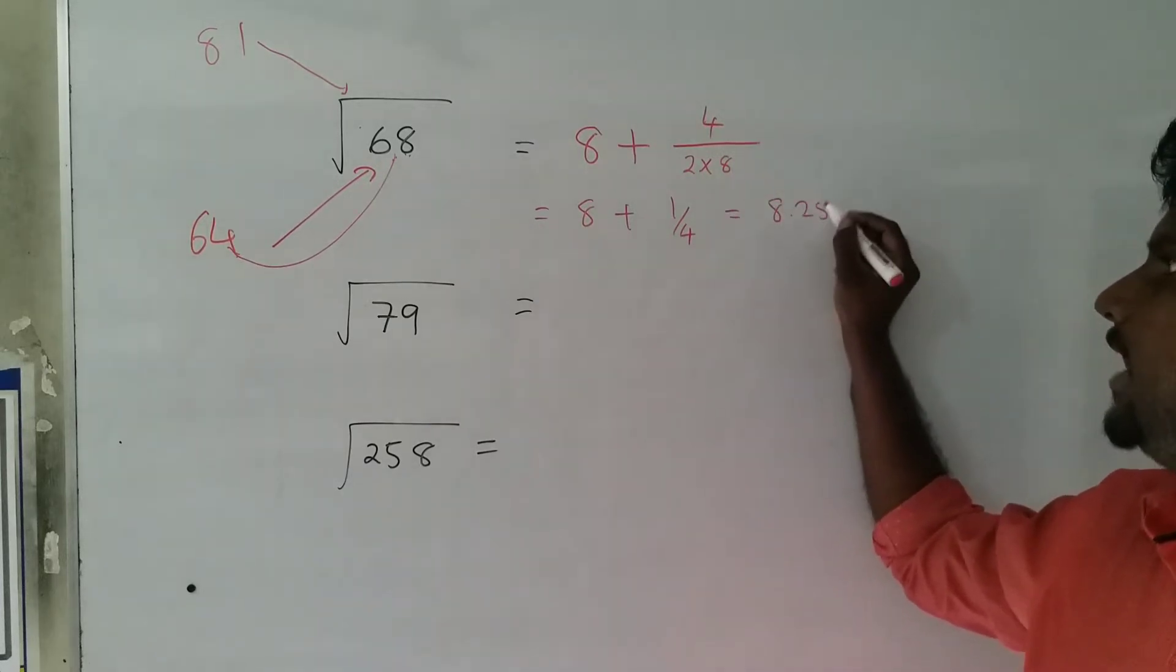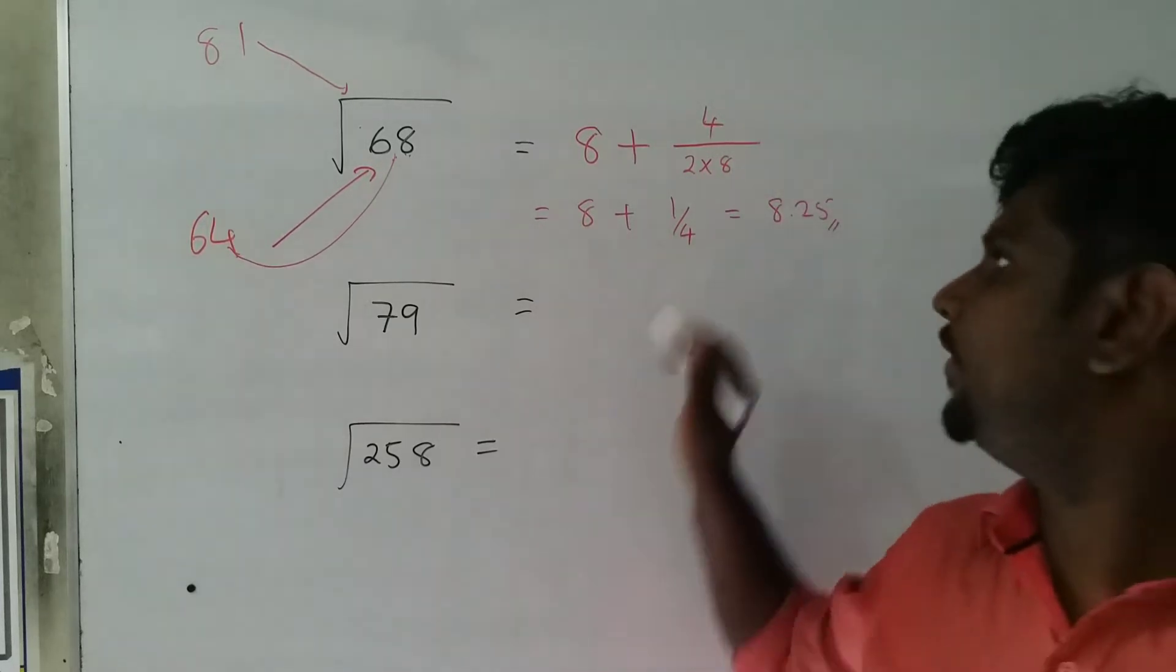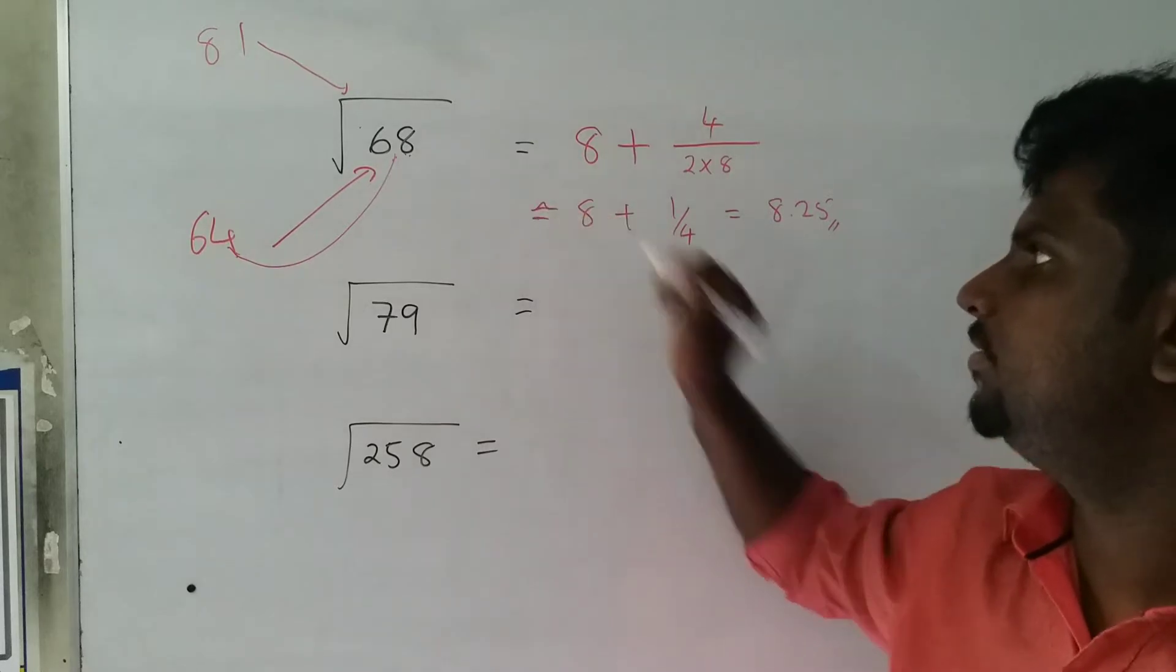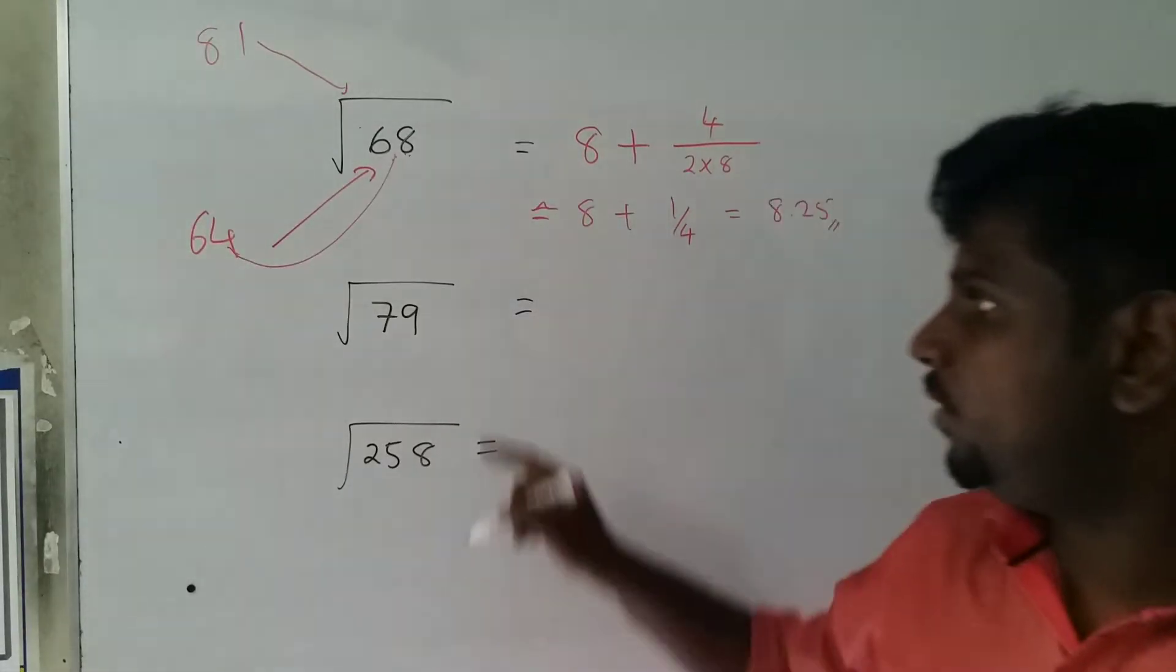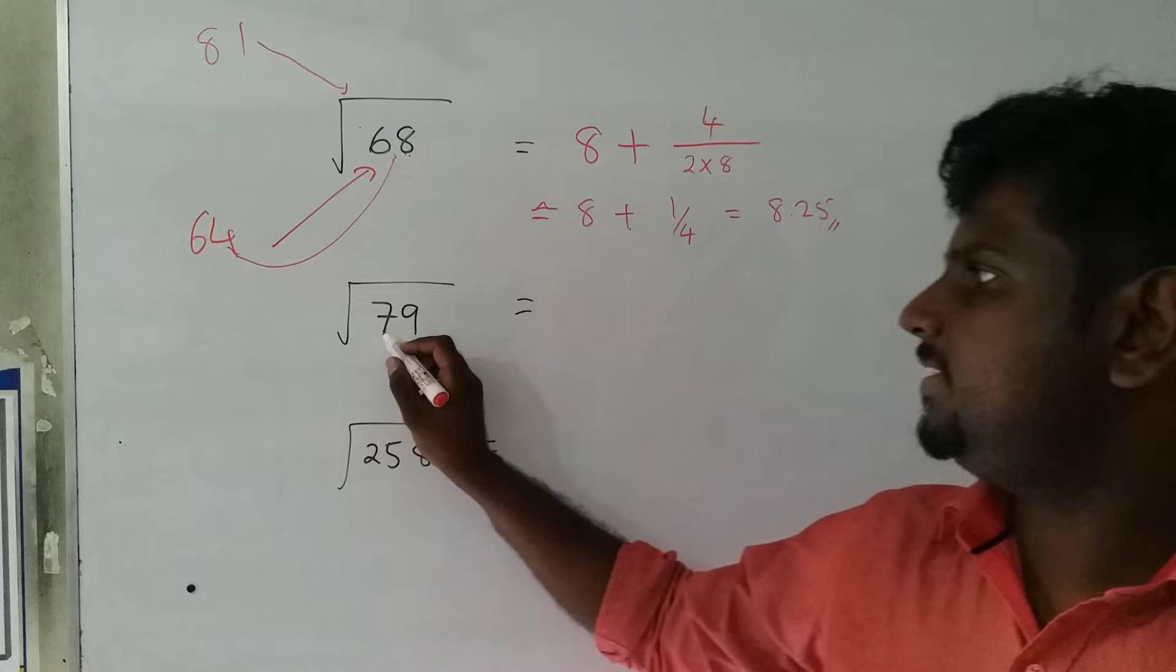It's going to be nearly 8.25. Likewise here, this is very close to 64 and 81 but pretty close to 81 because this gap is smaller.